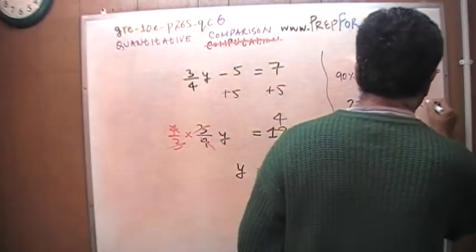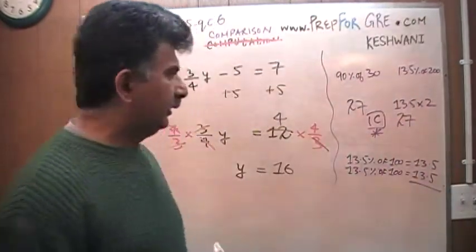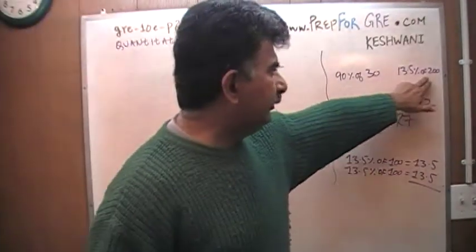This is 13.5 times 2 is what I meant to write. Why times 2? Because you've taken 200, not 100.